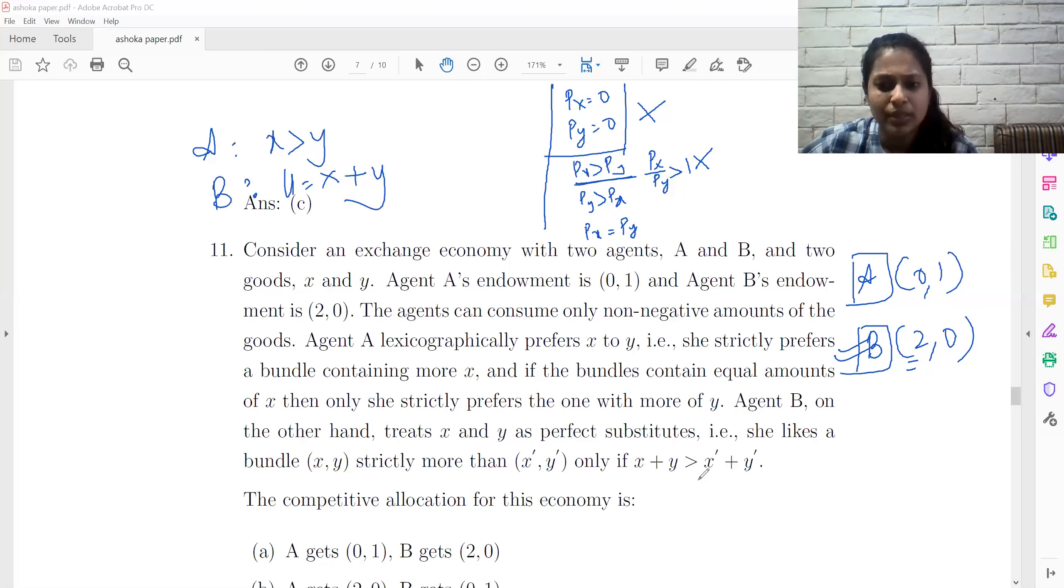So by the same argument that he is indifferent between X and Y. And if X is a cheaper good, then he wants all of only X, which he has. So he will not want to trade,